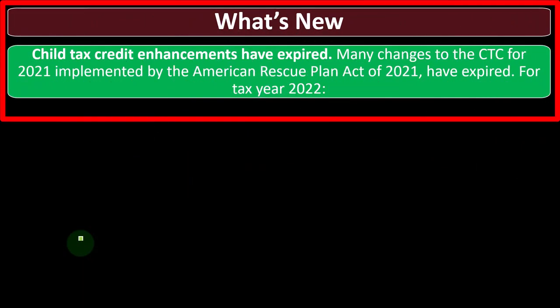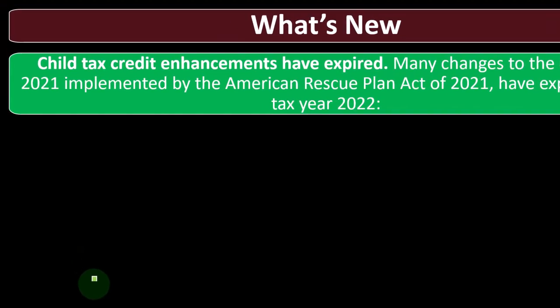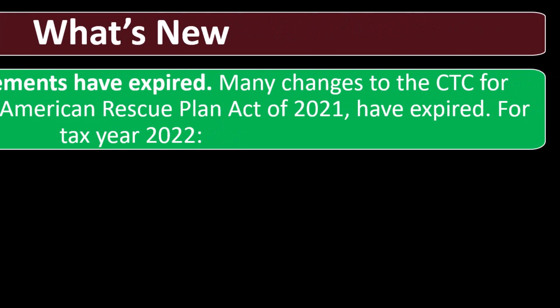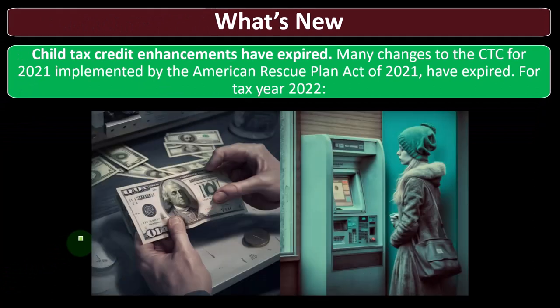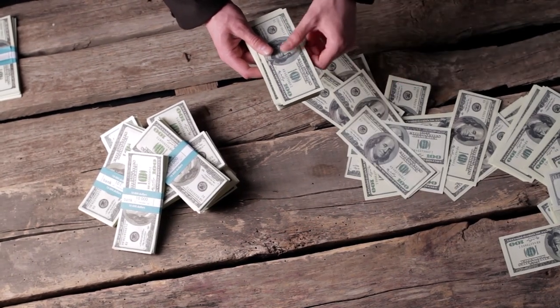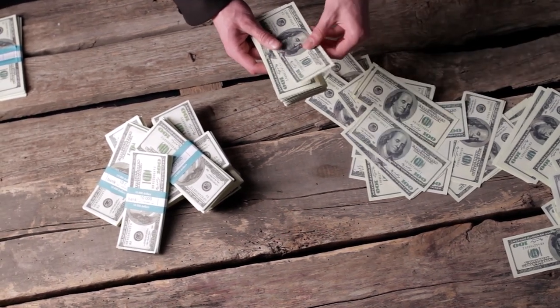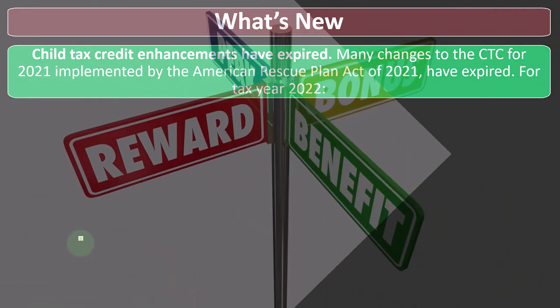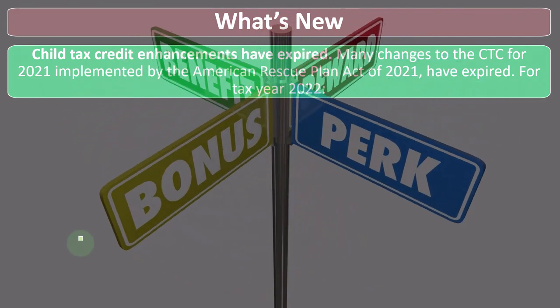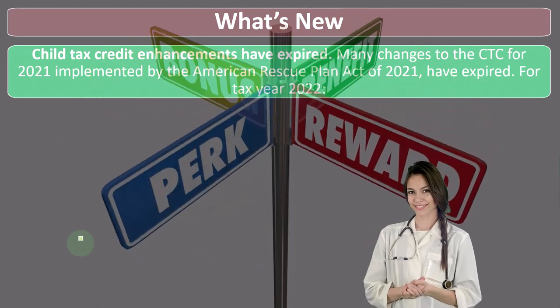During COVID, the government attempted through the IRS to put money into the economy — we saw that with stimulus payments, and they also adjusted some refundable credits, a big one being the child tax credit. There's been a lot of fluctuation with these credits, and they're going to need to pull back, because putting all that money out there causes inflation, which may ultimately be more detrimental to lower-income people in the long term than beneficial in the short term.